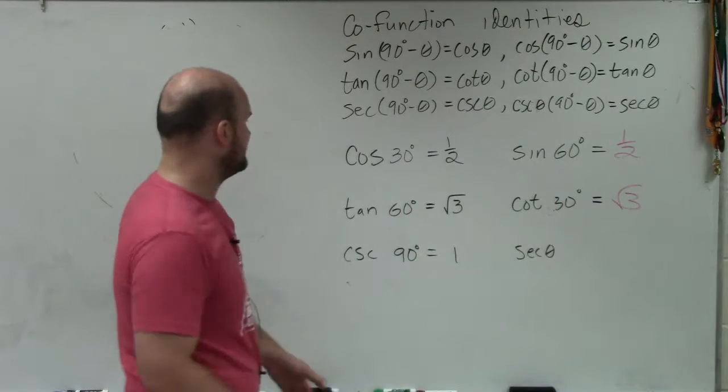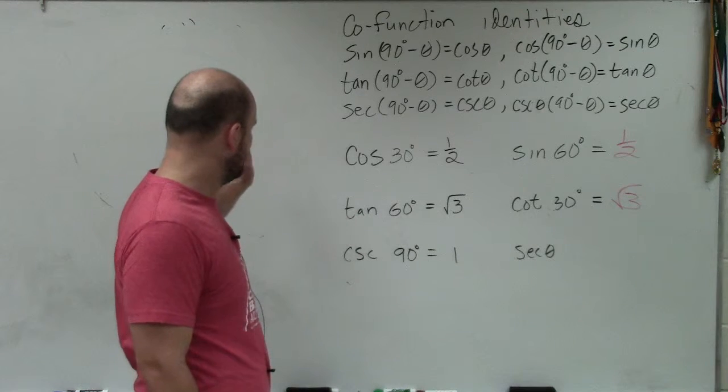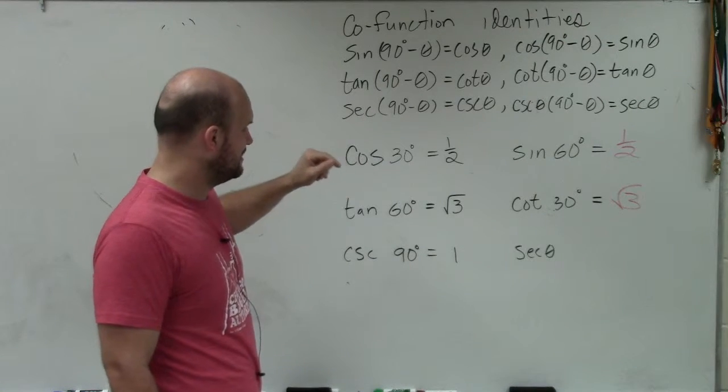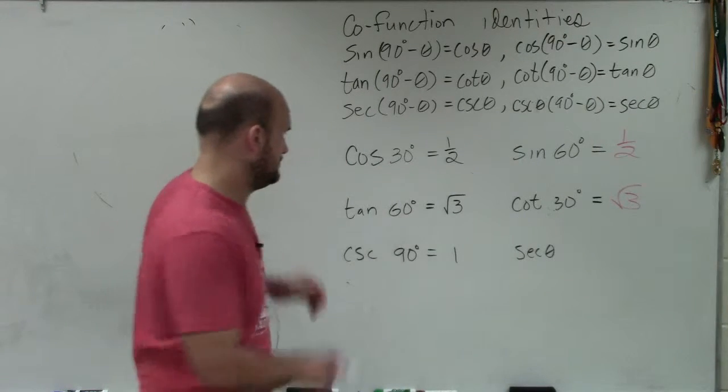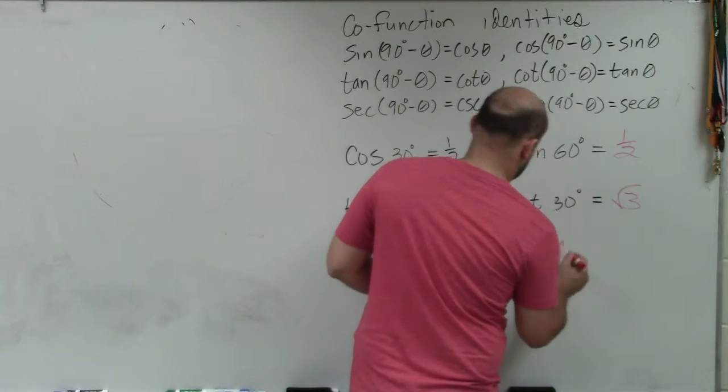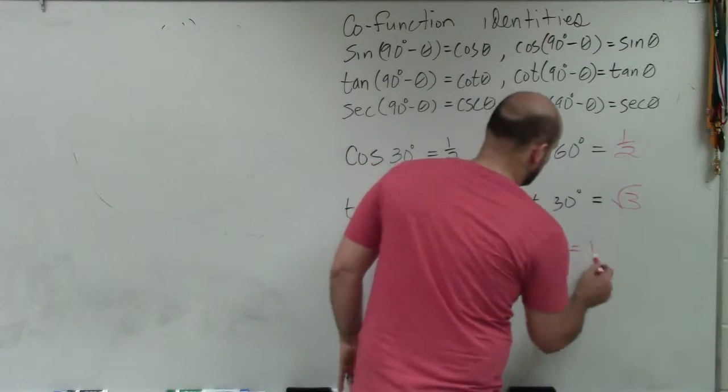Here I have the cosecant of 90 degrees, nine degrees, cosecant, 0, 1. So then that would be the secant of 0 degrees. That's what I found. So at 0 degrees, the x-coordinate for that is also equal to 1.